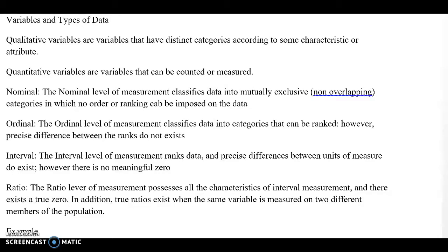Ratio. The ratio level of measurement possess all the characteristics of interval measurement and there exists a true zero. In addition, true ratio exists when the same variable is measured on two different members of the population.